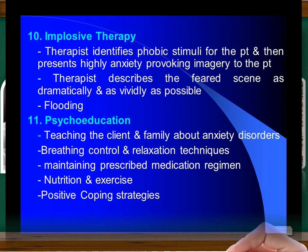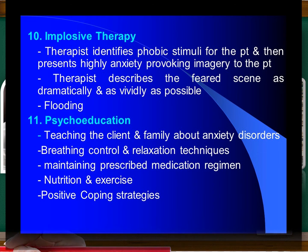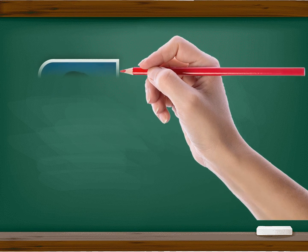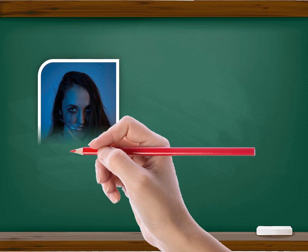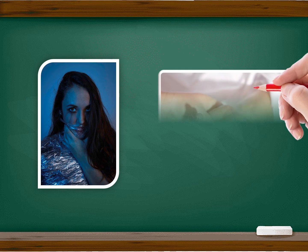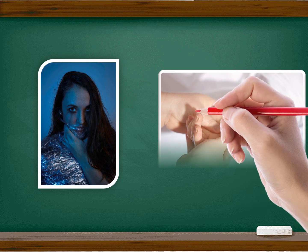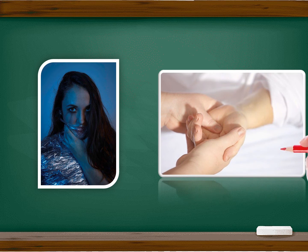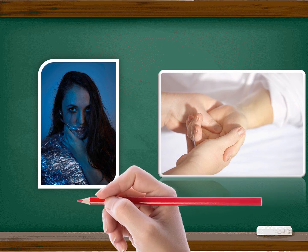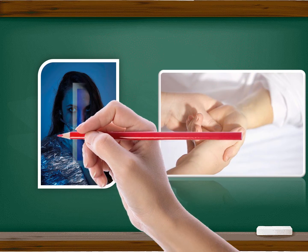Nursing interventions — promoting safety and comfort: provide a safe, quiet environment to reduce anxiety; ensure client's safety; stay with client; use a soothing, calm voice and give brief directions to assure client that he is safe. Therapeutic relationship and communication: establish trust and show unconditional positive regard and genuineness; communication should be simple and calm; tell the client that you recognize his behavior but calmly explain that such behaviors are methods to release anxiety. Do not touch a person with high anxiety, as it may be interpreted as a threat.